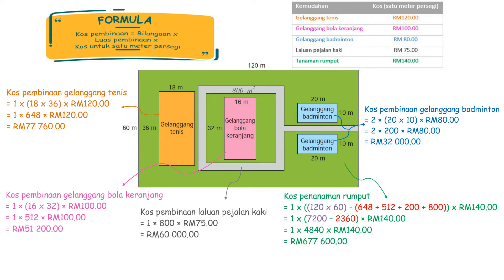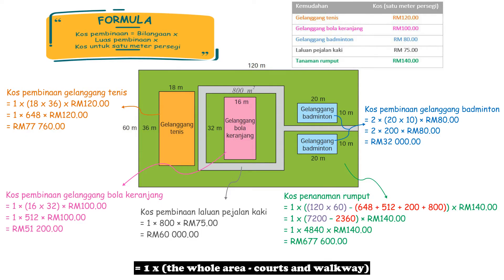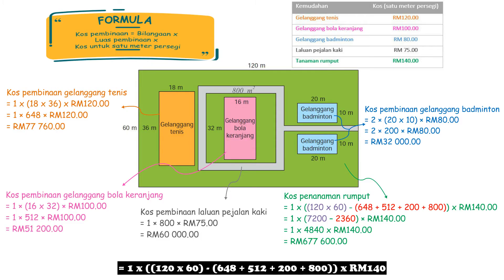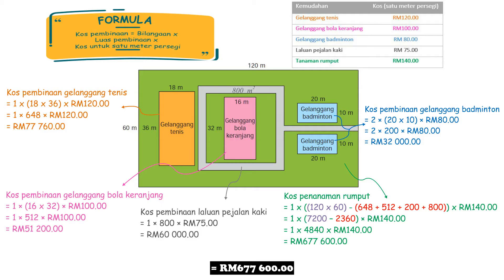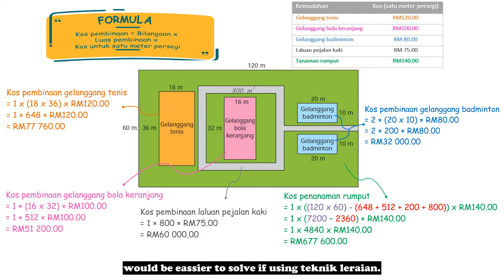Cost of walkway = 1 × 800 × RM75 = RM60,000. Cost of planting grass = 1 × (total area − courts and walkway) × cost per square meter = 1 × (120 × 60 − 648 + 512 + 200 + 800) × RM140 = RM677,600. In conclusion, this landscaping task would be easier to solve using Teknik Leraian.